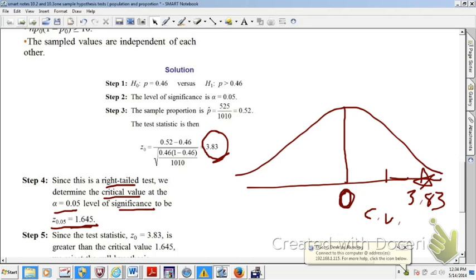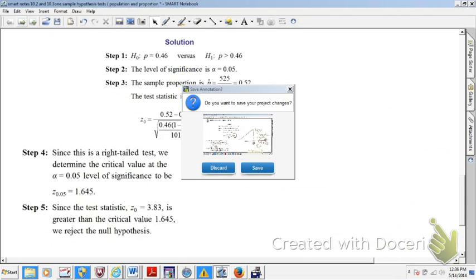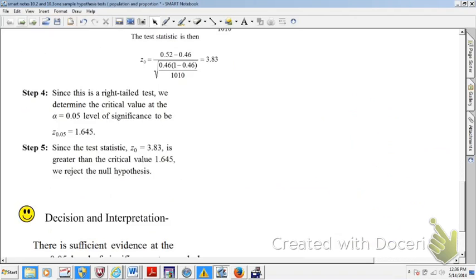So that's z sub 0.05 is 1.645. So by now in the course, I'm assuming that you know how to use the z-table backwards and figure out if there's 0.05 area in the upper tail, what's the corresponding z-score. So 1.645 is your CV, your critical value. And your test statistic definitely lives further out in the tail. And you can even say it like this, lives in the rejection region. So the rejection region is beyond 1.645. So you will reject the null.